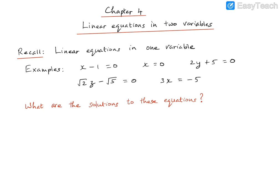The second important piece of information is that these are linear equations in one variable. If you notice all these equations, they have a single variable represented by a single letter. This equation has only one variable, which is X. This again is an equation with the single variable X. This one has a single variable Y, and this one has a single variable Z. So when we say linear equations in one variable, it means the equation has only one letter or one variable in it.